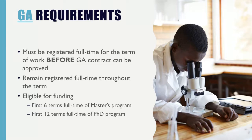These are some requirements specific to GAs. If you're a GA, you must be registered full time. If you're not registered, the department cannot approve your contract and you will be unable to work. Please make sure you're registered as a full-time student as soon as possible, and note that you must stay registered full time throughout the entire semester. If these conditions are met, you can fill a GA appointment for the first six terms of your master's program, or the first twelve terms if you are a full-time doctoral student.